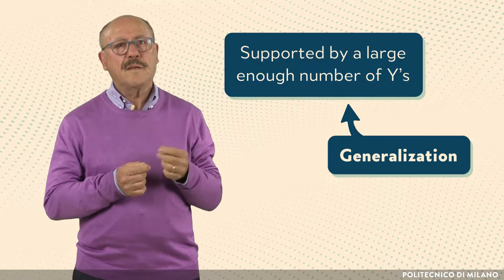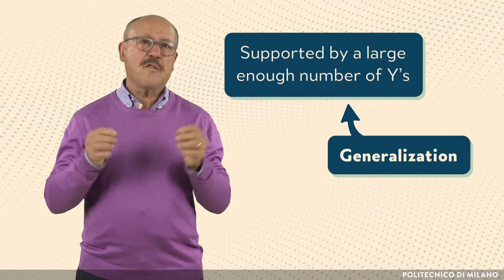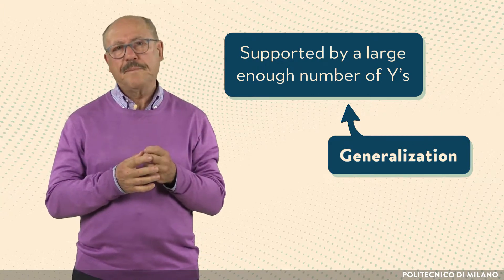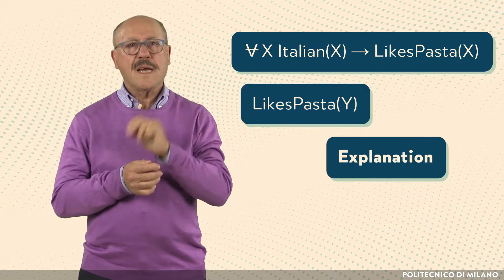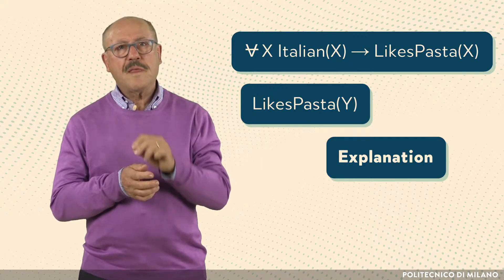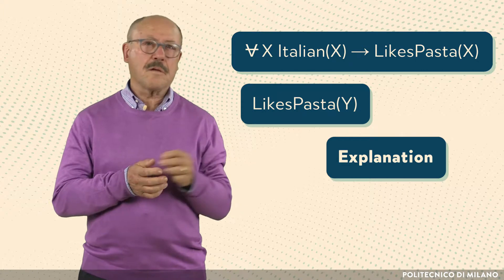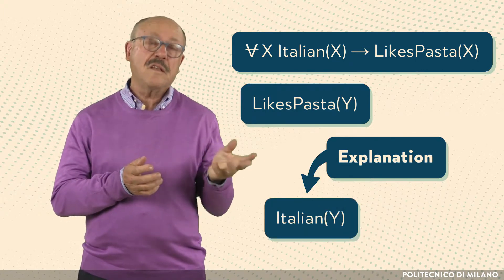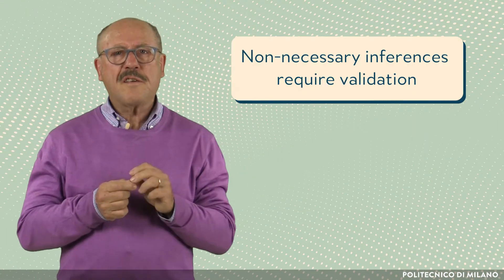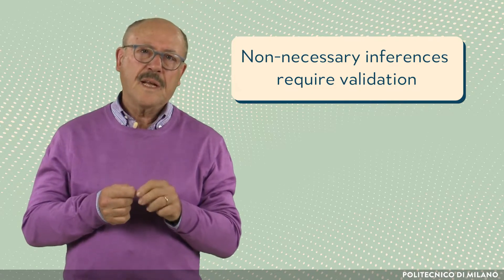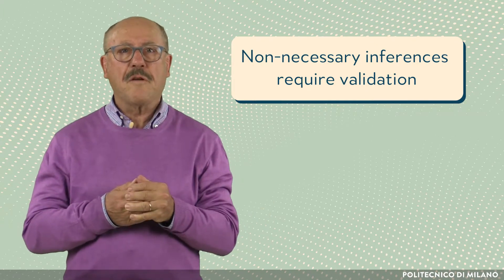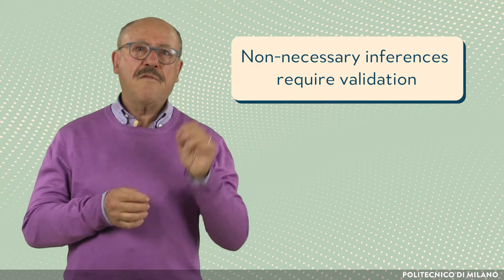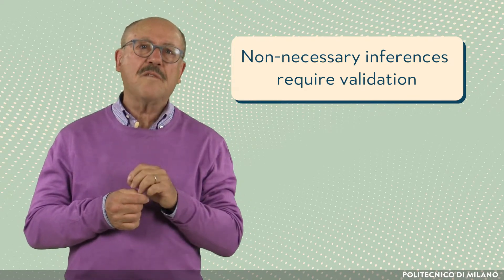The generalization is supported by a large number of unbiased observations that do not violate the inferred property. Another kind of induction leading to a non-necessary conclusion is explanation. In the example, assuming that all Italians like pasta (the major premise), and observing that an individual likes pasta (the consequence), we would explain the observation by postulating that the individual is Italian. Non-necessary inferences intrinsically need to be validated. Deductive reasoning is used to generate experiments that either confirm or invalidate the hypothesis conjectured through inductive reasoning. If they do not hold, they need to be revised in the form of new hypotheses.